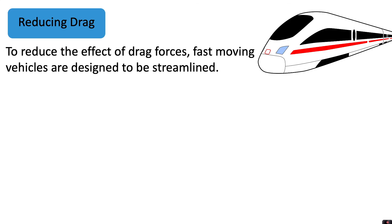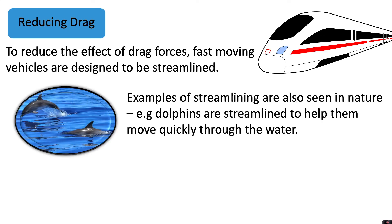To reduce the effect of drag forces, fast moving vehicles are designed to be streamlined. Examples of streamlining are also seen in nature — for example, dolphins are streamlined to help them move quickly through the water.